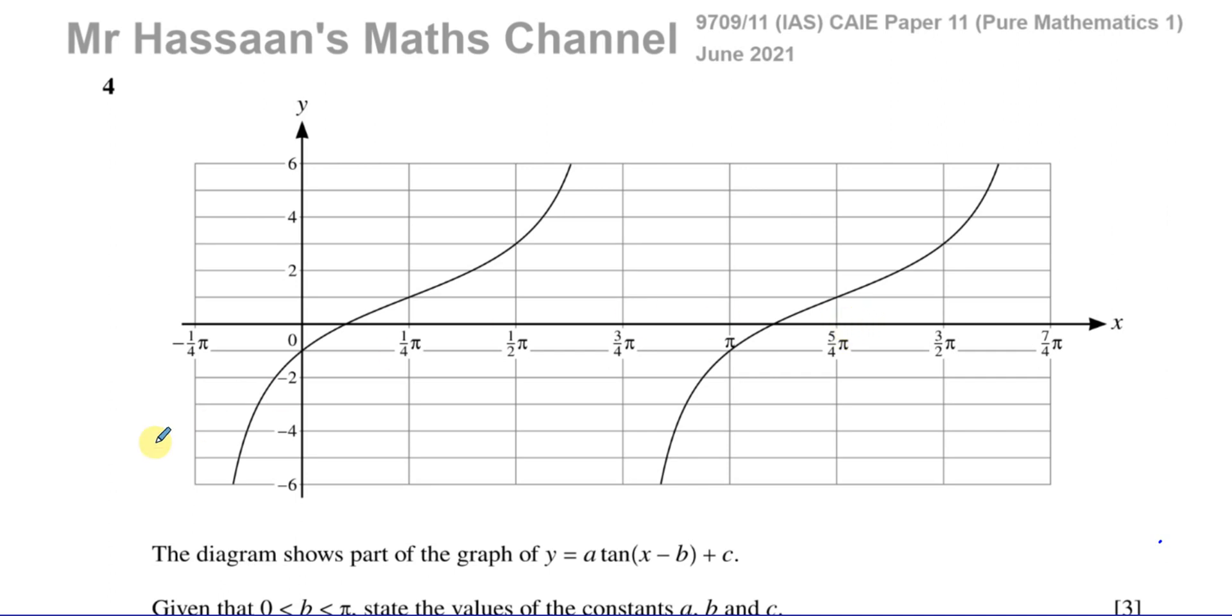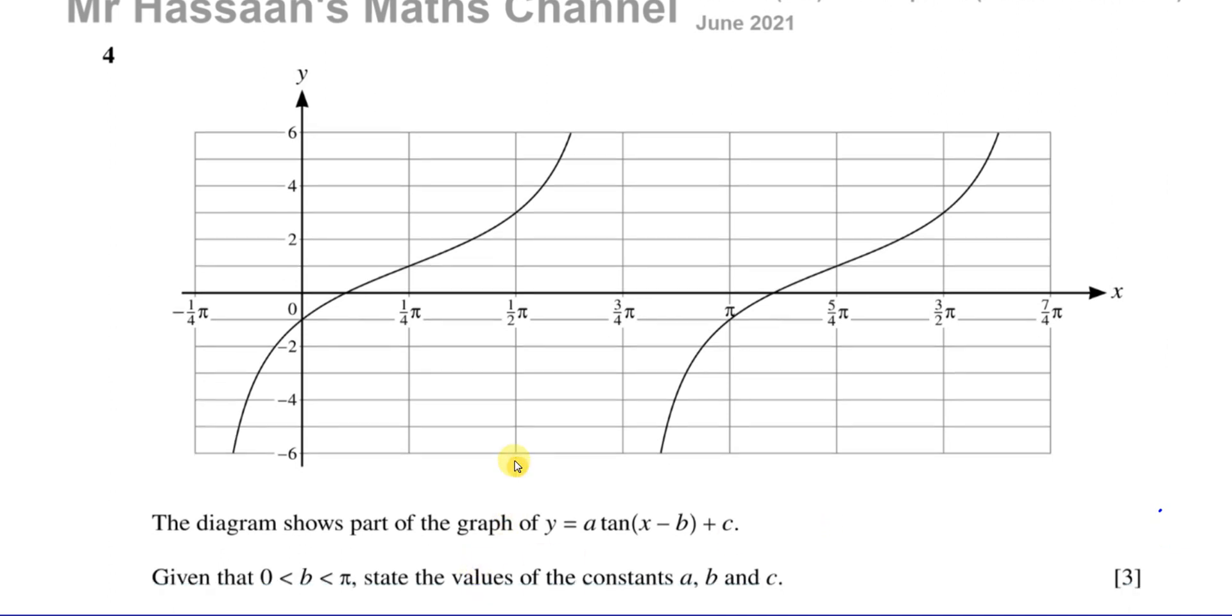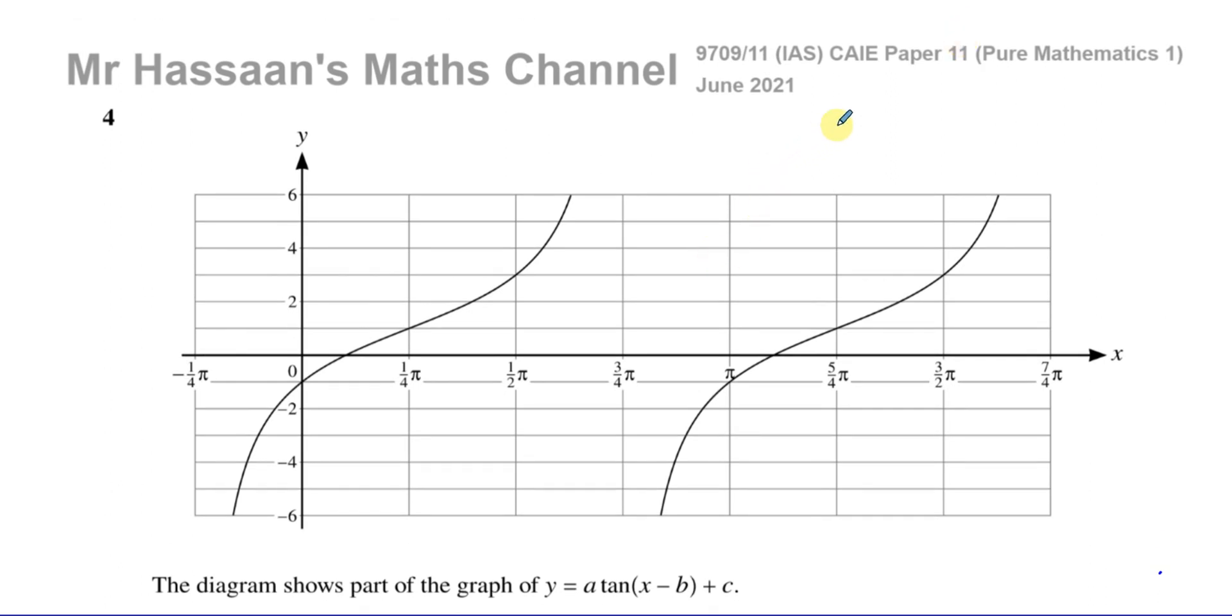We have here a graph which shows part of the graph of y equals a times tan of x minus b inside that bracket plus c. So we want to find the values of a, b, and c given that b is between zero and pi. There's a transformation taking place here between the curve of y equals tan x and y equals a times tan of x minus b plus c.